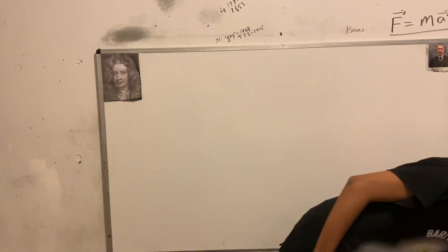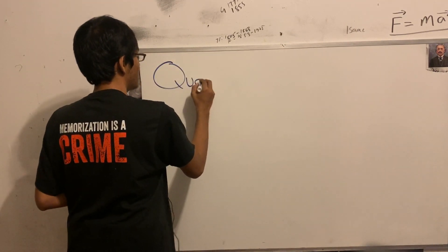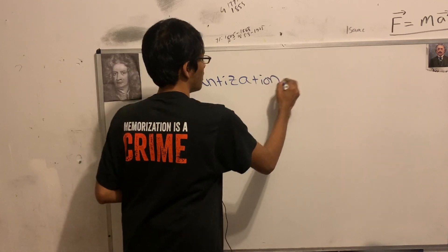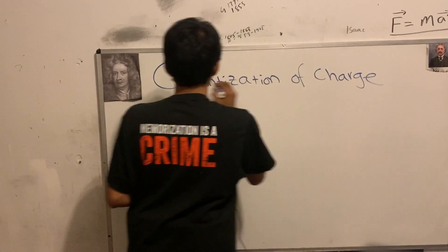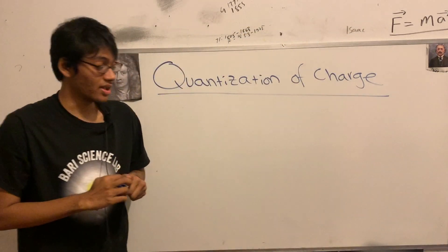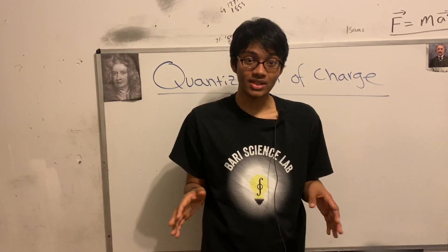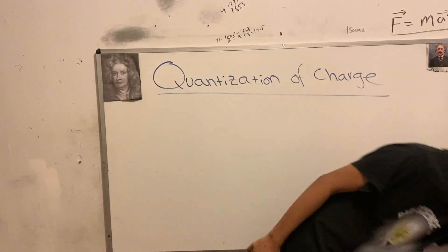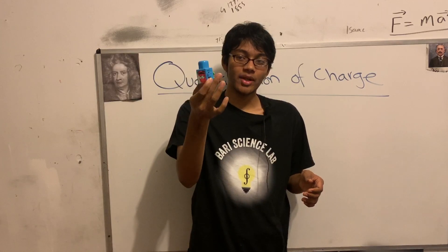Let's go ahead and write that down — the quantization of charge. What do I mean by quantization of charge? Well, what I mean is that every charge we find in the universe, every charge that we observe in experiments, is going to be a multiple of the charge carried by one electron.